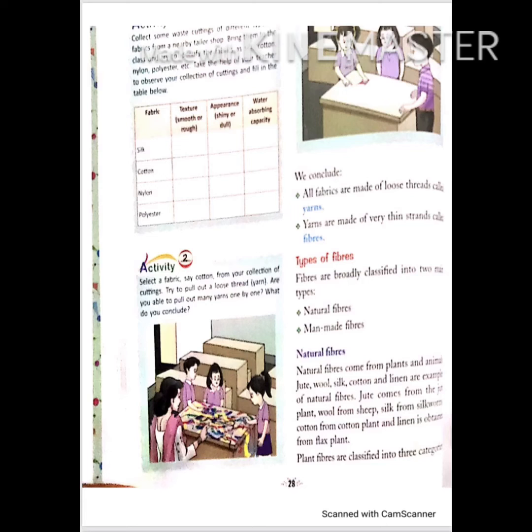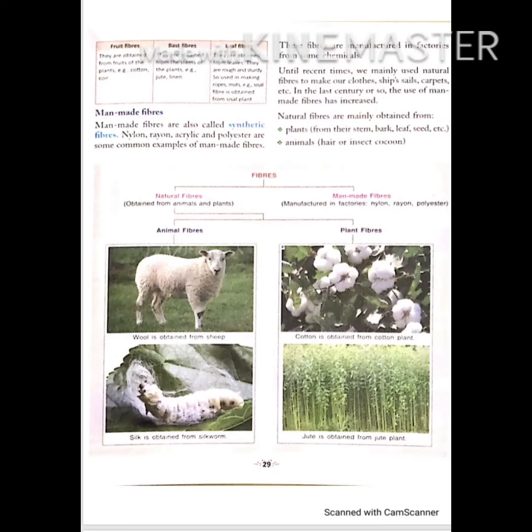Plant fiber is divided into three categories: fruit fiber, stem fiber, and leaf fiber.